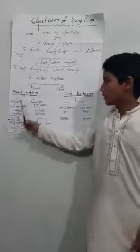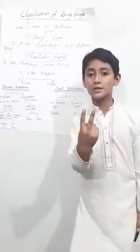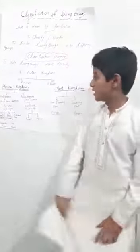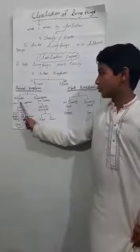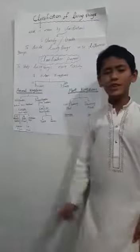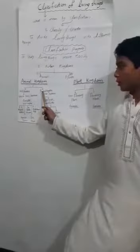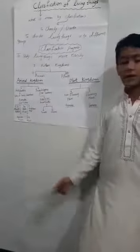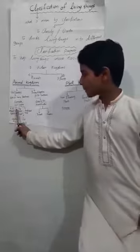Animal kingdom — the animal kingdom has two kinds: vertebrate and invertebrate. Vertebrate are animals which have a backbone, and invertebrate are which have no backbone.